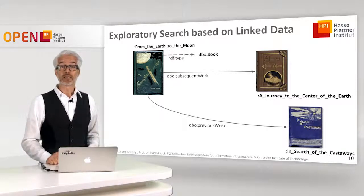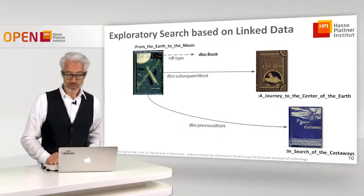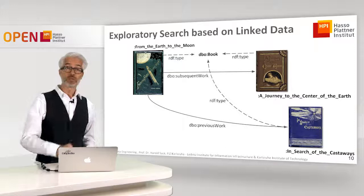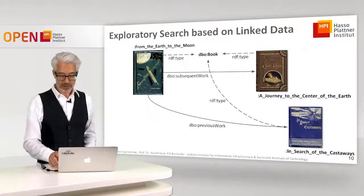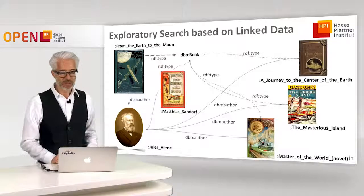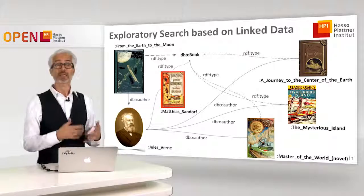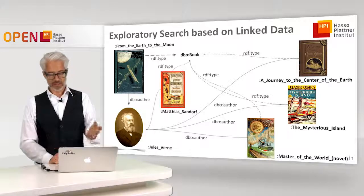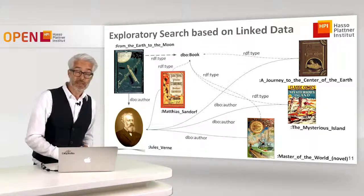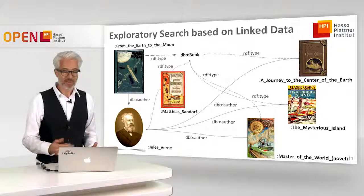Looking at direct links to other books: the subsequent work is A Journey to the Center of the Earth and the previous work is In Search of the Castaways. The fact that both are also books emphasizes they may be good recommendations. Alternatively, knowing that From the Earth to the Moon was written by Jules Verne, other books by Jules Verne — like Matthias Sandorf, The Mysterious Island, or Master of the World — could be a good starting point for exploration, connected via the author Jules Verne.